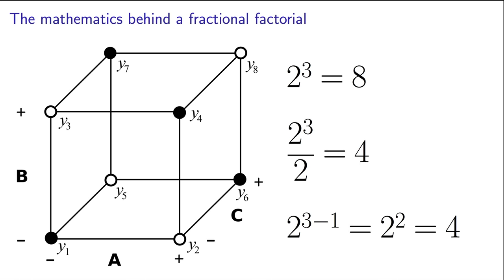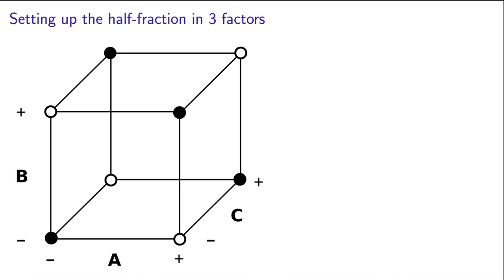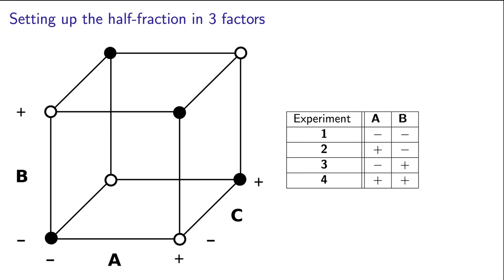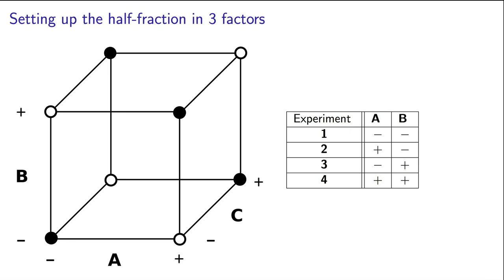Since we know that we will have 4 experiments, we can quite happily go ahead and write out our standard order table for the first 2 factors, A and B. We do this because we know 2 factors require 4 experiments. OK, but what about that third factor, factor C? At what settings should we write out that factor?